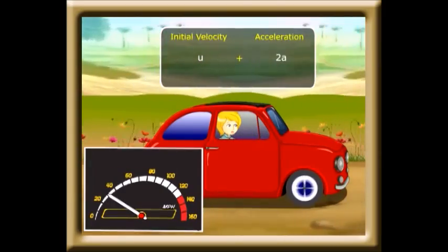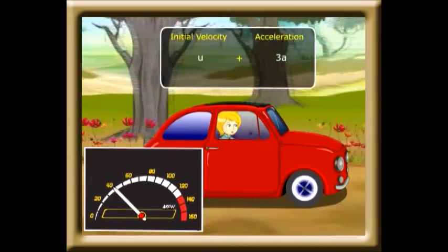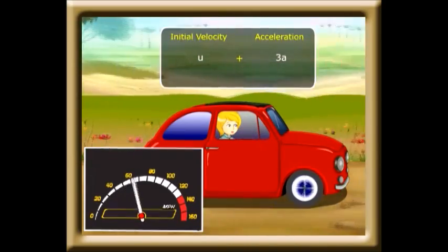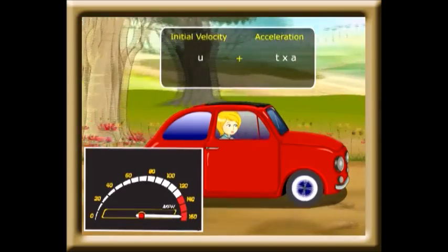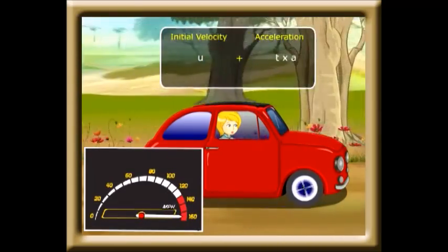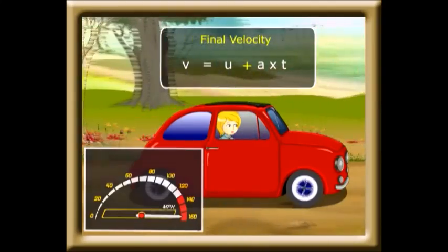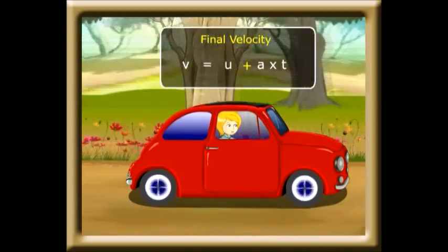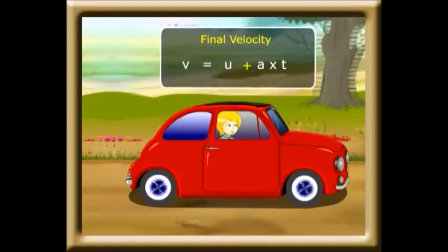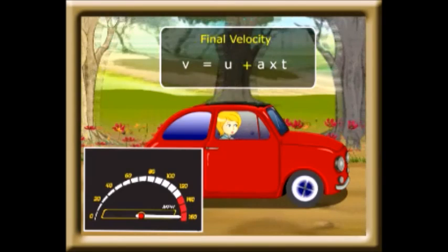After three seconds we get u plus 3a, and this continues, so that after t seconds it is u plus ta. So we get a final velocity v equal to u plus at. This is our first equation of motion: v = u + at.